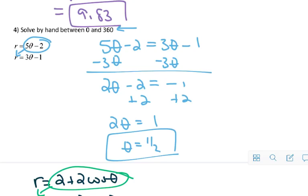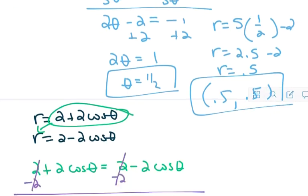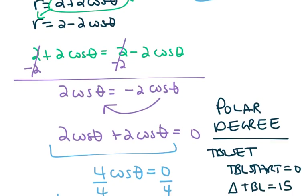So, in problem number 4 here, I still need to find out what r is. So, if theta is 1 half, I'm going to find out that r is 0.5. So, the ordered pair where the two graphs intersect is at 0.5 comma 0.5 for this problem down here.